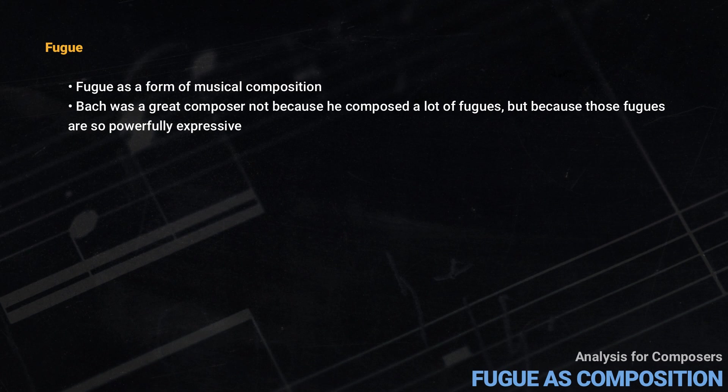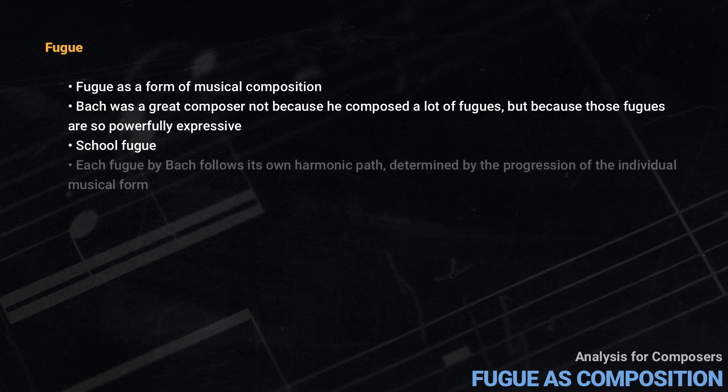In some pedagogical traditions there is a form known as the school fugue with many rigid rules. These can be useful when beginning to study fugue, but they have not much to do with real fugal composition. For example, in the school fugue the modulations always follow the same set pattern. However, this is not the case in Bach's fugues. Each fugue by Bach follows its own individual path, determined by the requirements of the individual musical form, not by some abstract rule.